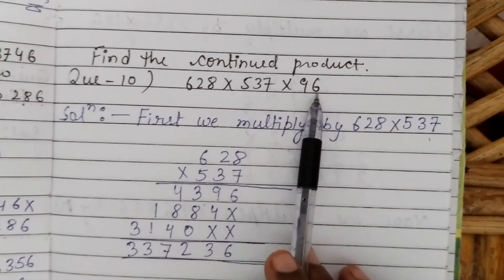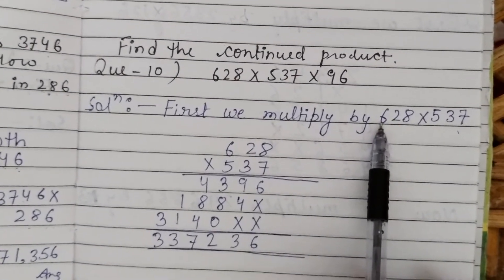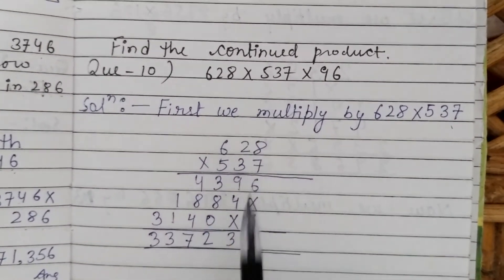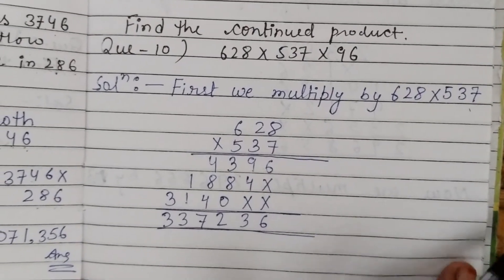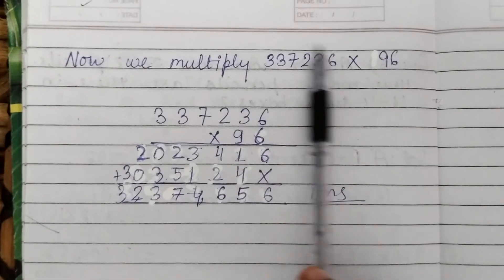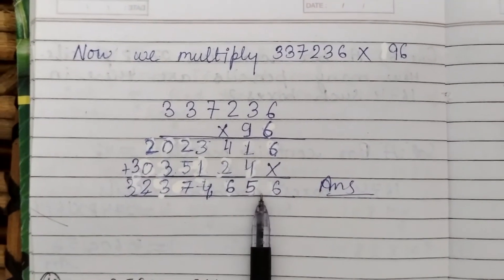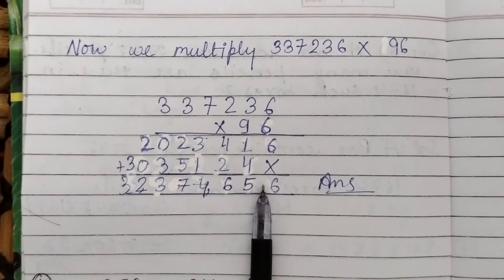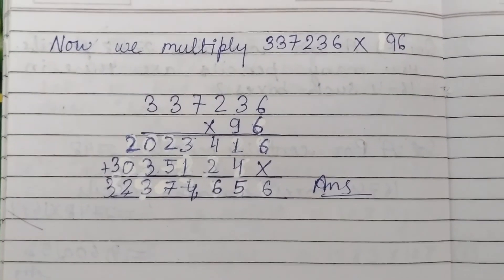Continued product means when you multiply continuously. First we multiply 628 into 537 — I have done that multiplication here. After you get that answer, we then multiply it by the last remaining number as shown. This is how we solve continued multiplication problems. Okay, thank you very much.